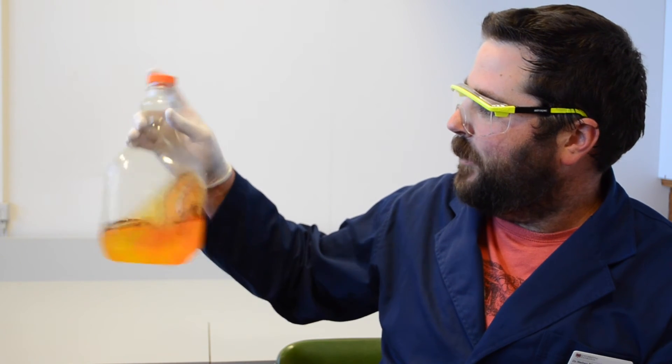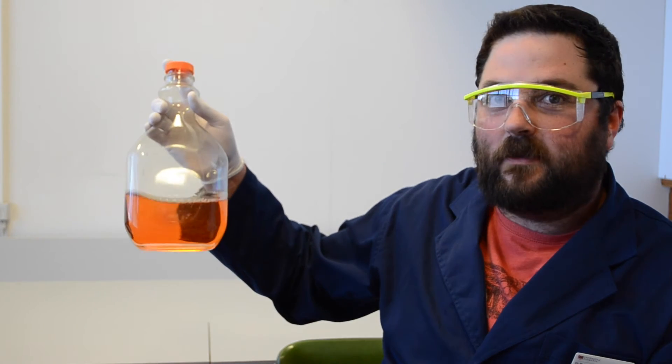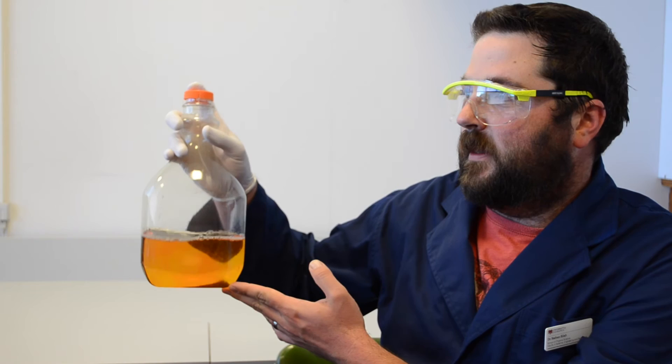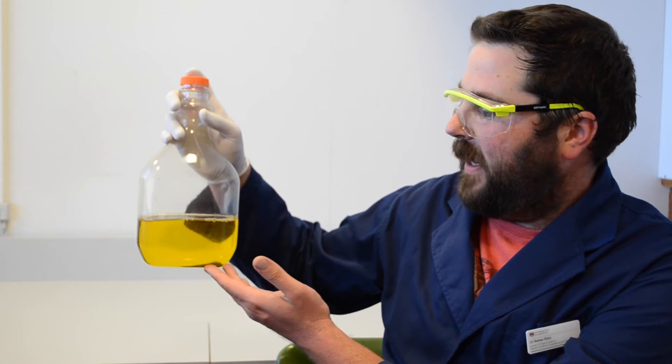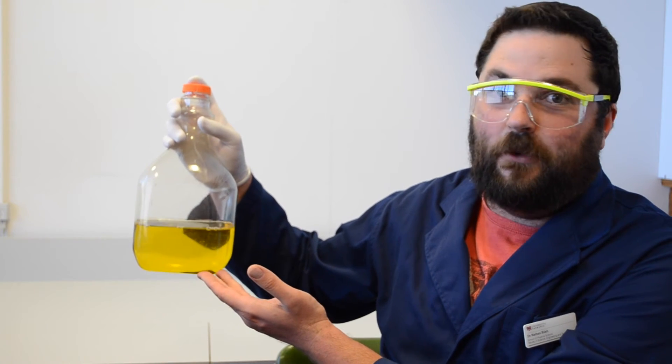When I shake the bottle, I'm oxidizing the indigo carmine to this red form. If I leave it sit, the glucose acts on the dye to return it back to the reduced or yellow form.